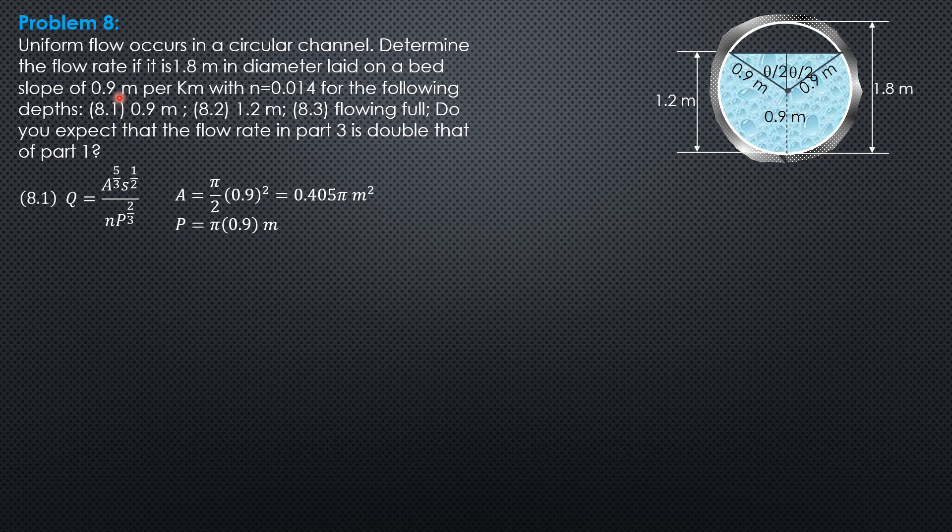So substitute into the formula where the slope is 0.9 over 1000, so 0.0009, and n is already given. So 0.405 pi to the 5 thirds times 0.0009 to the 1 half over 0.014 times 0.9 pi to the 2 thirds. So the discharge, when the depth of flow is 0.9 or half full, is 1.601 cubic meters per second.